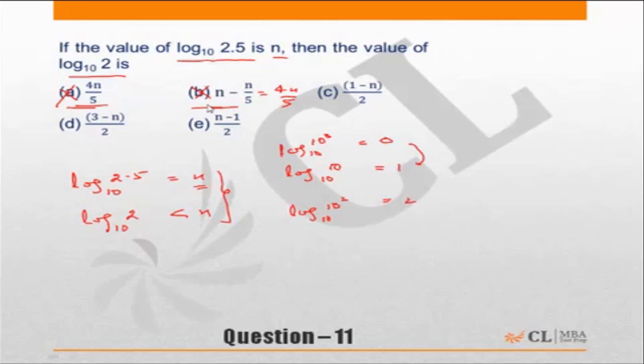Let's go to choice C. We know n is less than 1, so (1-n) will be less than 1, divide by 2 - yes, this could be the answer. My condition is that n has to be between 0 and 1.